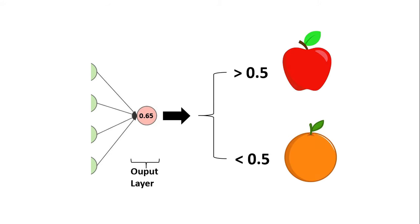As our final output can only be an apple or an orange, thus the output layer will have only one neuron which holds a value between 0 to 1, showing the probability of an image being an apple or an orange. If the value comes out to be greater than 0.5, then we classify it as an apple. If the value comes out to be less than 0.5, then we classify it as an orange.